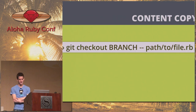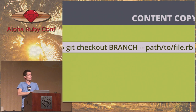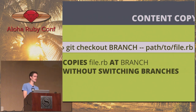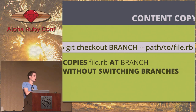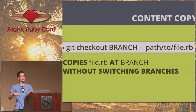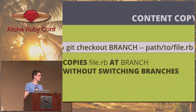Something I learned recently: copying the content of a file from another branch. If you say git checkout, then the branch, then --, then the path to the file you want, it basically copies what's in that file on that branch into your current working copy without having to switch branches. I use this when I definitely want a file from another branch but don't want to merge the whole branch.